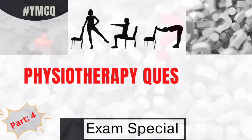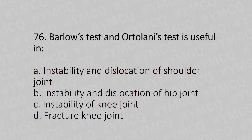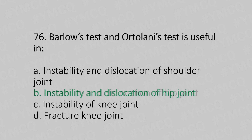Welcome to part 4 of the physiotherapy question and answer MCQ series. Question 76: Barlow's test and Ortolani test is useful in — option A: instability and dislocation of the shoulder joint; option B: instability and dislocation of the hip joint; option C: instability of the knee joint; option D: fracture of the knee joint. The answer is option B: instability and dislocation of the hip joint.